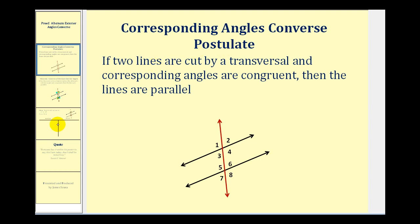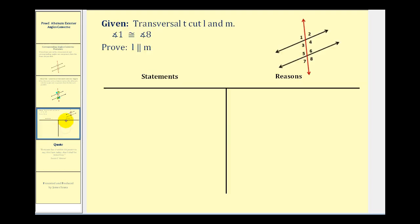We're going to use this postulate to prove the alternate exterior angles converse. Here's our proof: transversal T cuts lines L and M, and we're given that angle one is congruent to angle eight. Our ultimate goal is to get corresponding angles congruent so we can apply the corresponding angles converse postulate. Notice that angle five and angle eight are vertical angles, as are angles one and four.